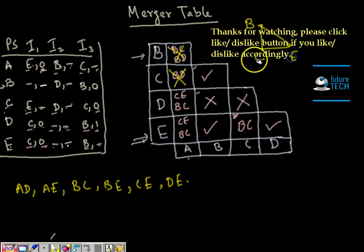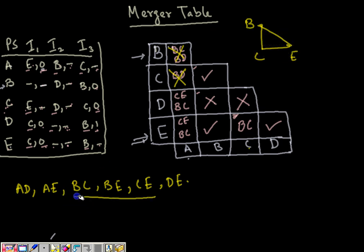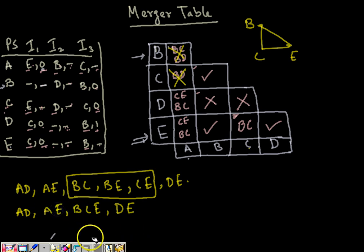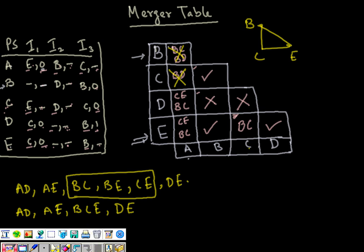We can club compatible pairs together: A-B-C-E, B-C, B-E, and C-E are compatible and can be grouped. We can list them as: A-D, A-E, B-C-E are compatible, and D-E is also compatible. This is the set of compatible states, and we are done. We can find out the compatible states using a merger table as well.